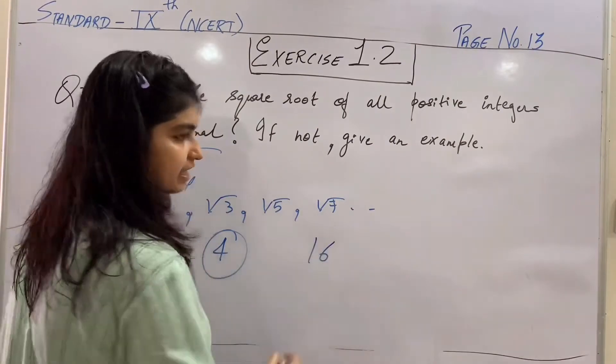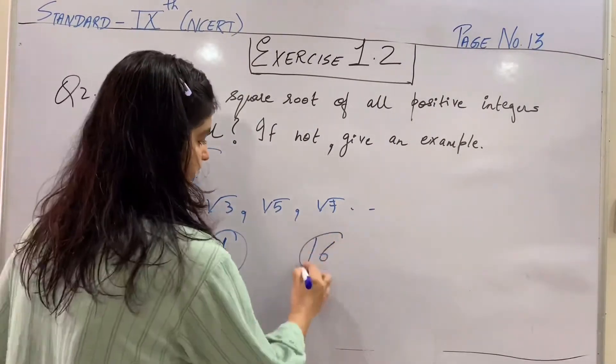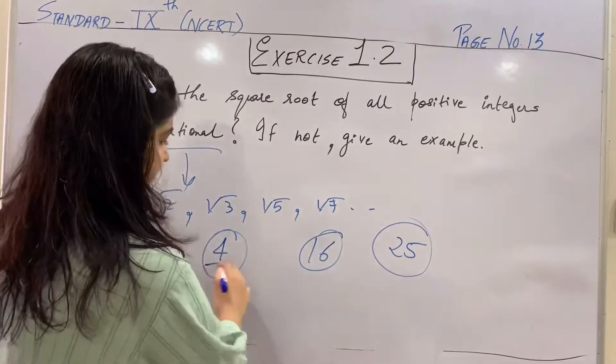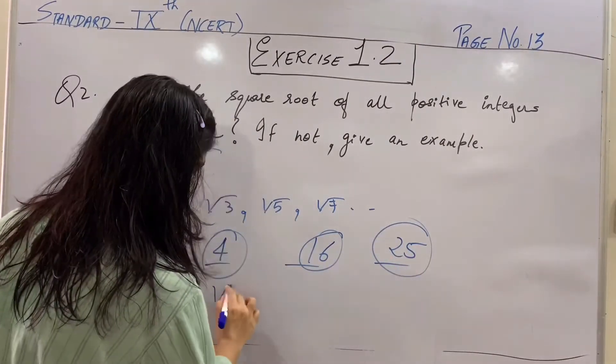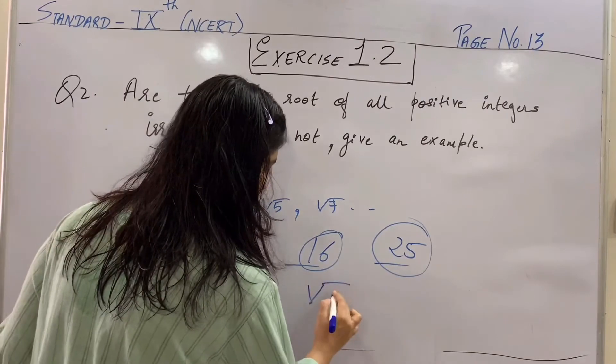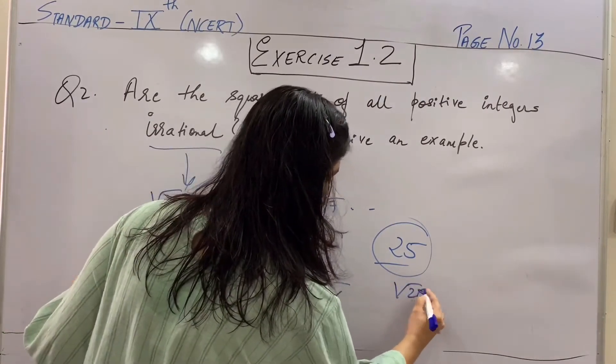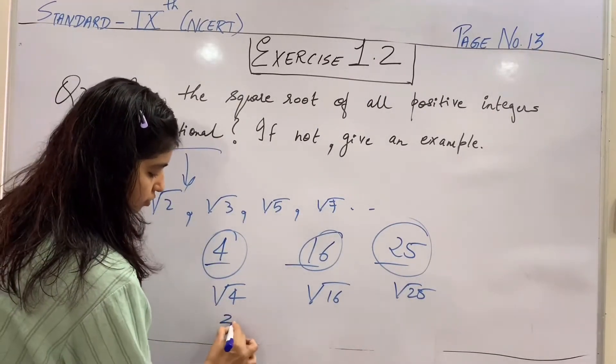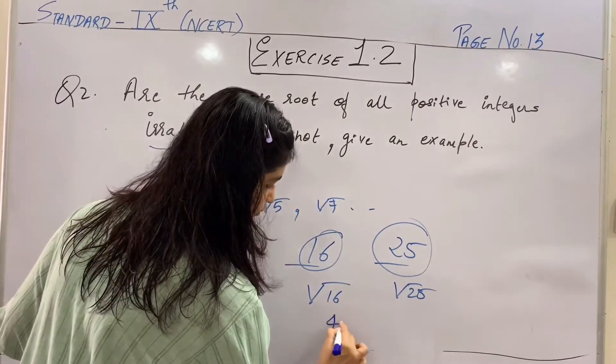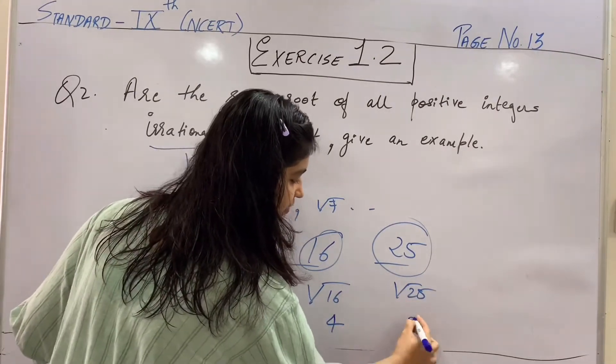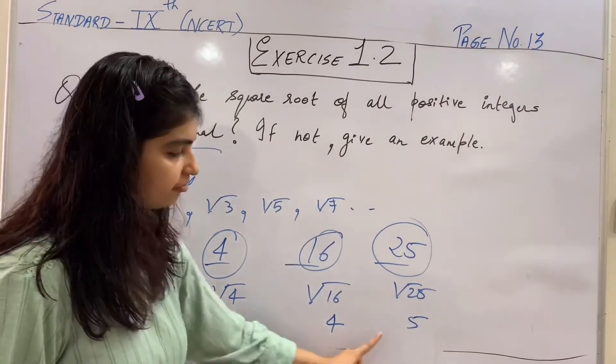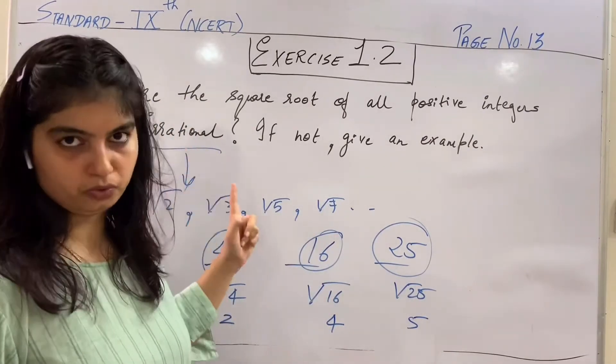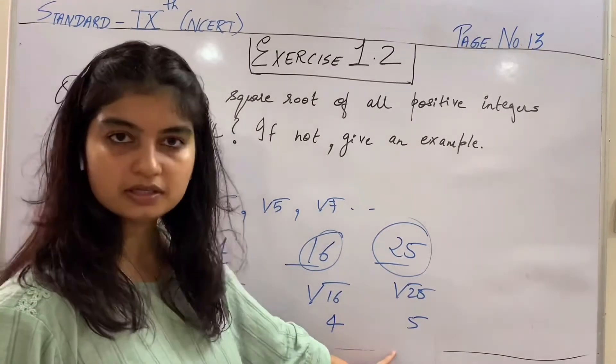Then is 25 a positive integer? Yes. Agar hum lete hain root 4, root 16 and root 25, toh iske answers kya banenge? Aapko pata hai, root 4 is 2, root 16 is 4, root 25 is 5. So, are 2, 4 and 5 irrational? The answer is no. They are not irrational numbers.